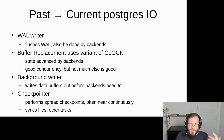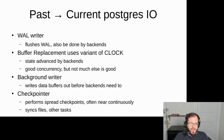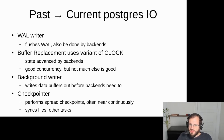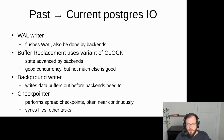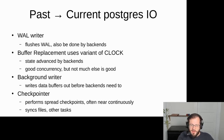The background writer writes out data buffers before backends have to do buffer replacement. The buffer replacement algorithm is based on the clock paper — the primary goal is that it's very concurrent. One doesn't need to maintain expensive linked lists. Instead, each buffer has a usage count since the last time the count was reset. Each backend goes through the clock of all buffers, checks whether a usage count is zero, decrements it, and moves on. The background writer integrates into that and tries to write out buffers before backends have to.